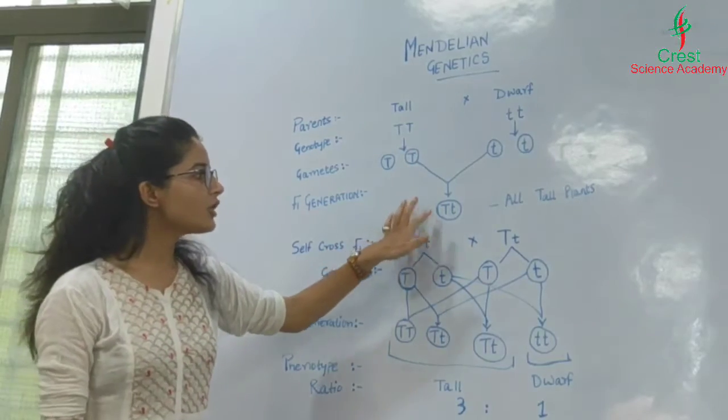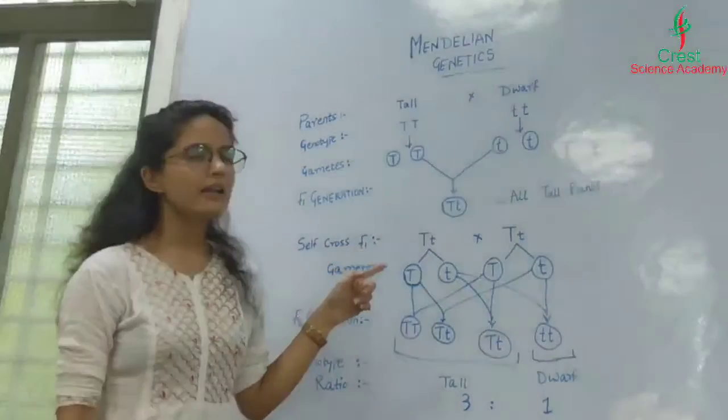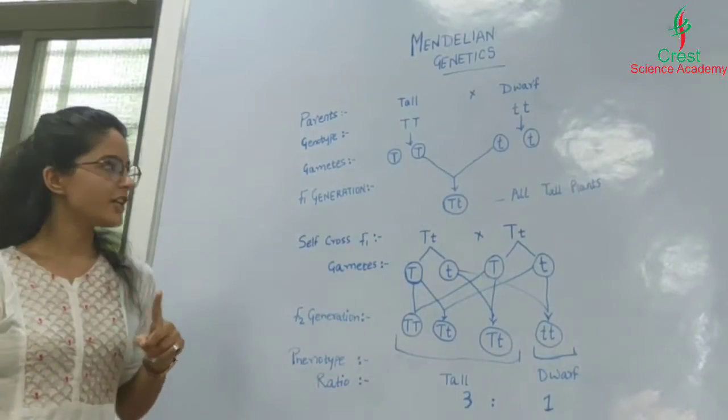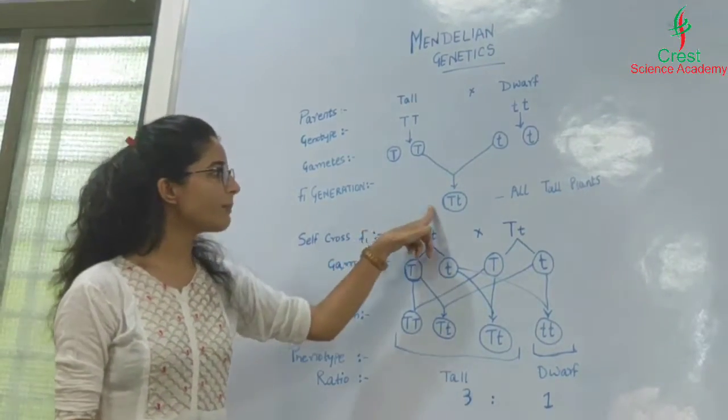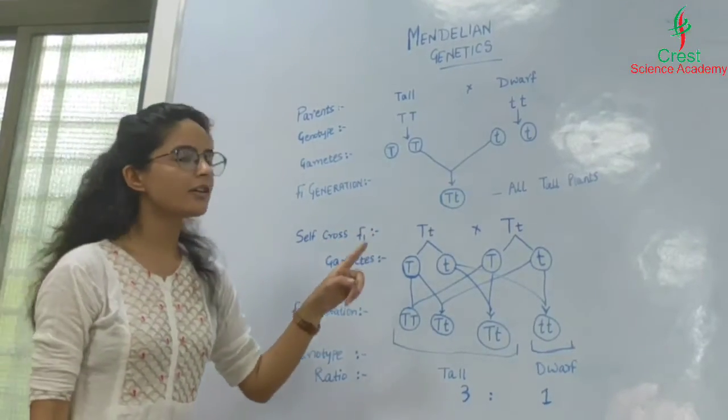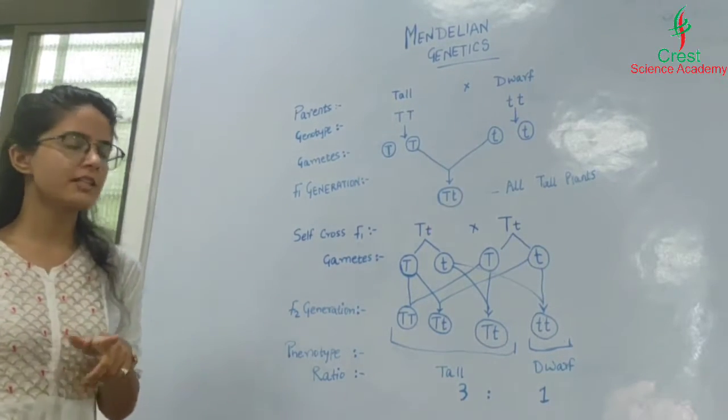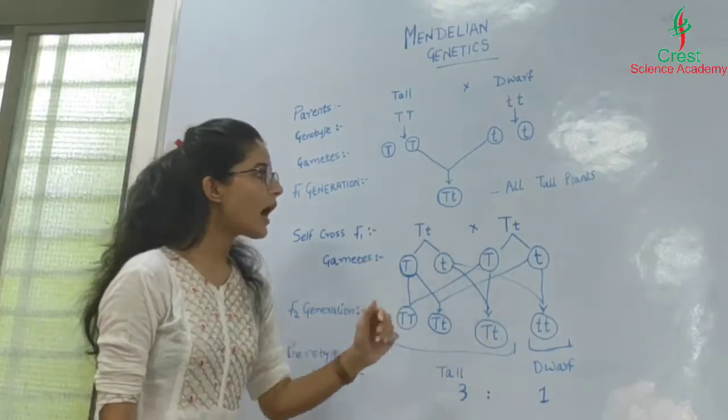This shows the dominant effect of the other allele, capital T. The capital T allele gets expressed in the F1 generation and its expression suppresses the expression of small t. Hence, he concluded that capital T is the dominant allele and it is dominant over the recessive allele small t.